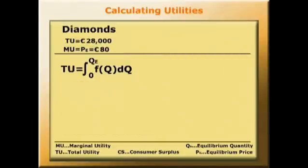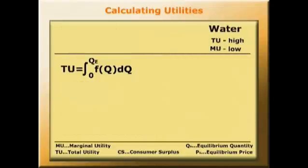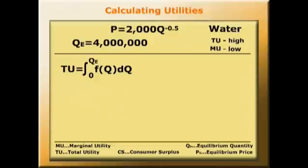Now let's look at the total utility of water, and here we'll assume a demand function of 2000 over root Q, or 2000Q to the minus 0.5, and we'll assume an equilibrium of QE equals 4 million, but PE is just 1 euro, a low price.